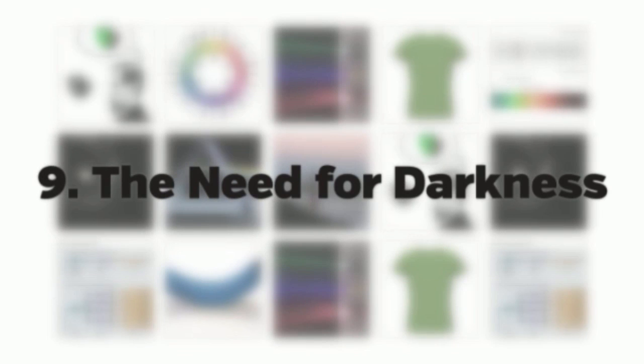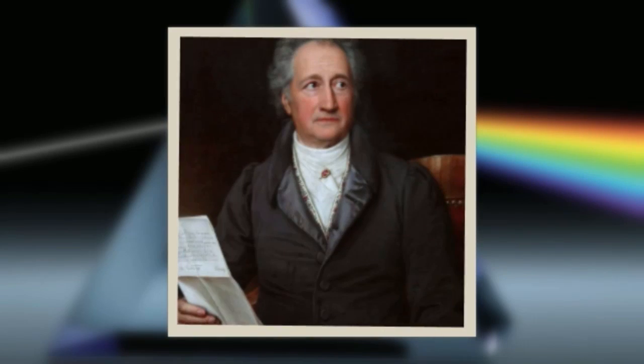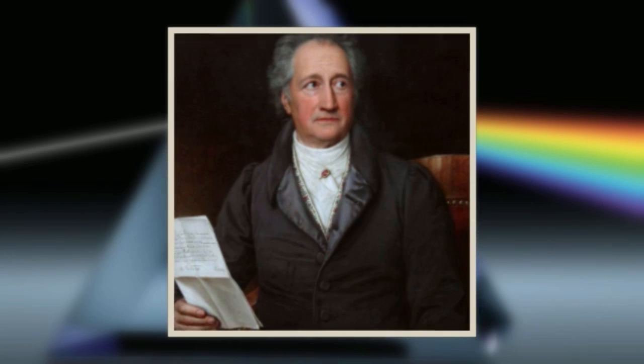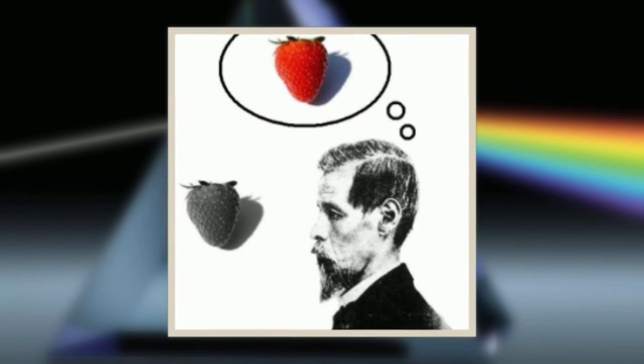9. The Need for Darkness. JW Goethe observed that by looking through a prism, color forms around darker objects against a light background. This coloring always happens as a transition from white to black going through yellow and red, from black to blue, violet, or from turquoise to white. Overlapping these two boundaries are the secondary colors, or inverted spectrum.